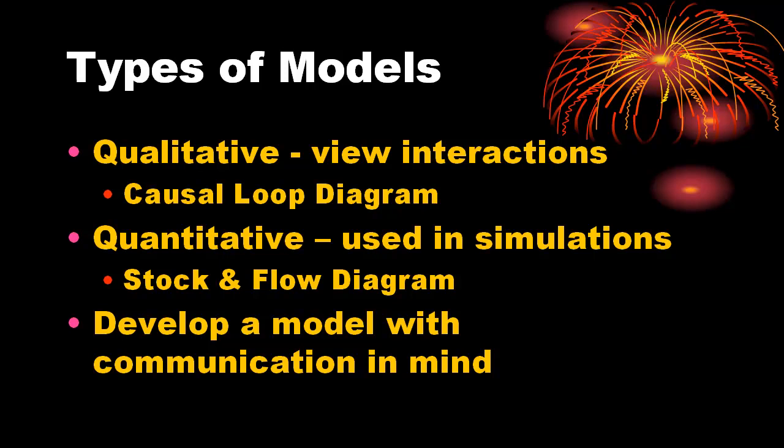Causal loop diagrams are used to show the relationships among the elements relevant to the situation. The indications of the relations are completely qualitative as there are no values associated with any of the items.